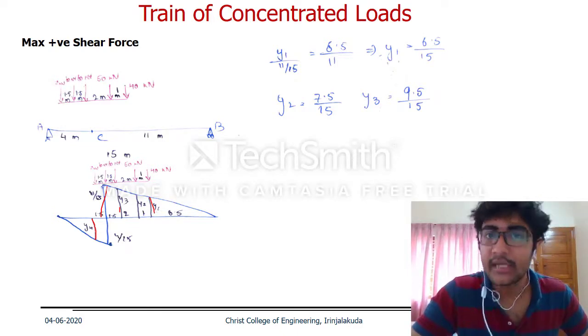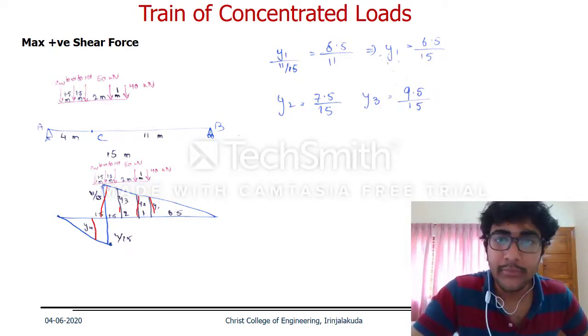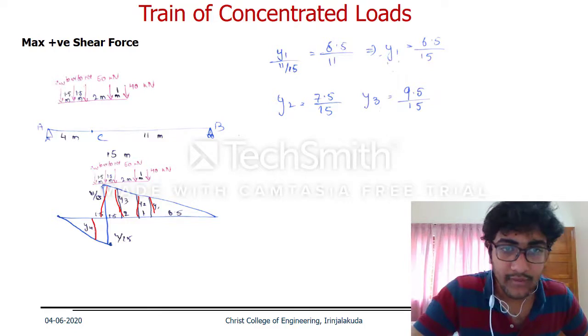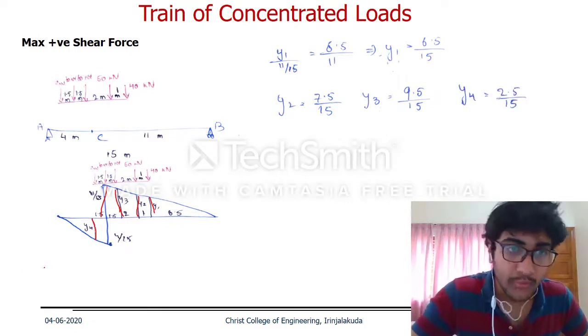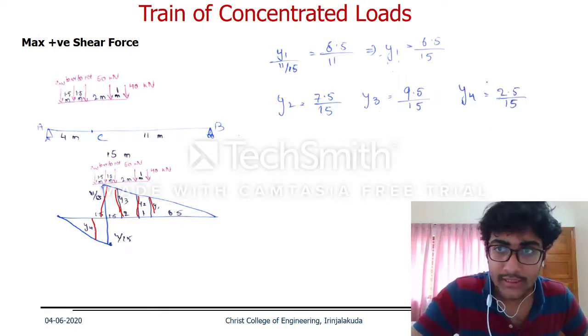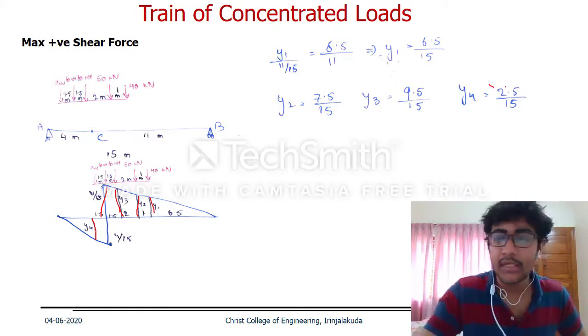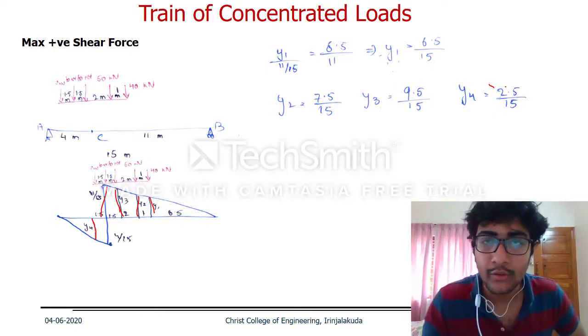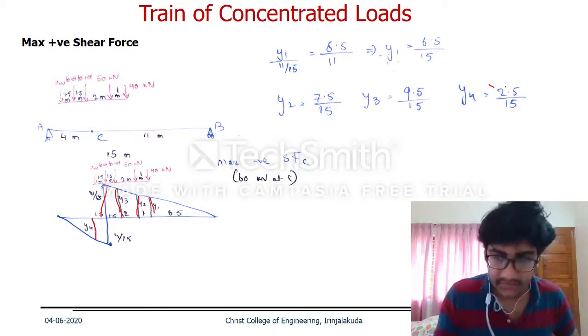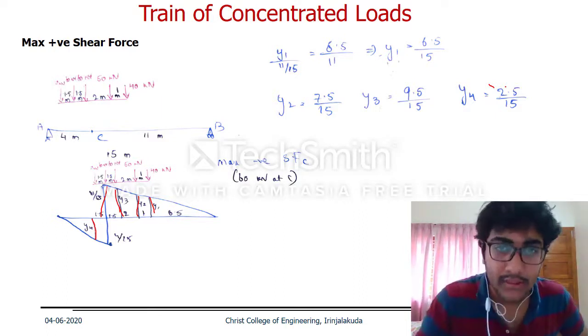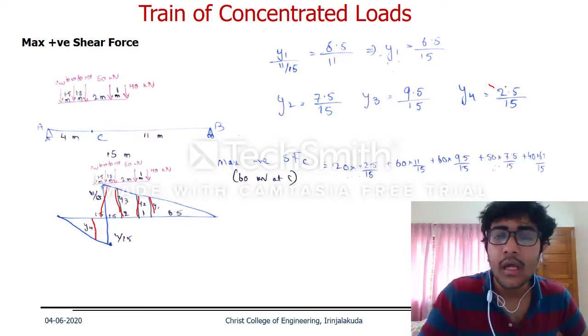The ordinate values are: 0.5/15, y2 is 7.5/15, y3 is 9.5/15, and y4 is 2.5/15. That value is actually negative because it's included in the negative part. So the maximum positive shear force when the 60 kN load is at C is calculated as follows.